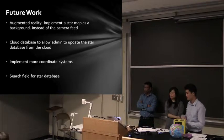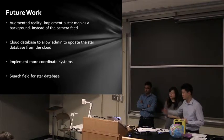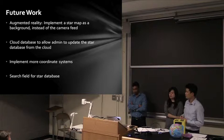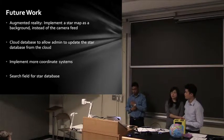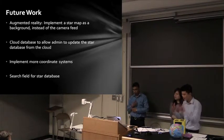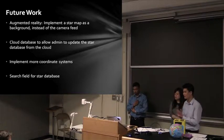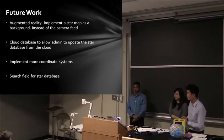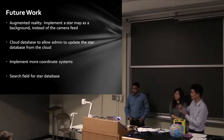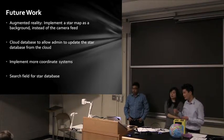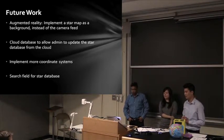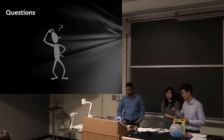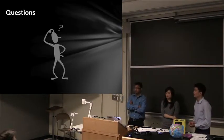For future work, we will implement additional coordinate systems — and there are many more coordinate systems people use for tracking stars. The fourth planned improvement is adding a search feature so instead of browsing a list you can search by the name of the star or by its coordinates. Thank you so much.